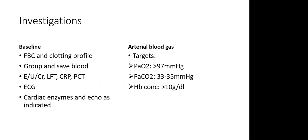After stabilising your patient, order investigations: a full blood count with clotting profile, group and save, electrolytes and renal function, CRP and procalcitonin. Do continuous ECG monitoring — a minimum of 5-lead ECG and if possible a 12-lead. Obtain cardiac enzymes and echo as indicated. For arterial blood gas, target a PaO₂ of at least 97 mmHg, PaCO₂ of 33–35 mmHg, and a haemoglobin concentration of more than 10 g/dL.